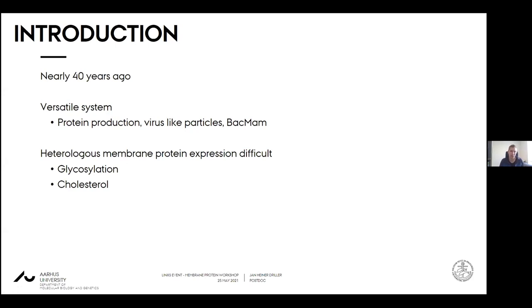Heterologous membrane protein expression is definitely difficult. Insect cells are one of the expression tools to overcome protein expression problems, especially if you think of glycosylation or the membrane composition, which can be quite different, for instance, in yeast or bacterial hosts.